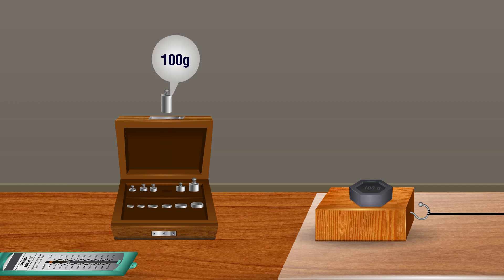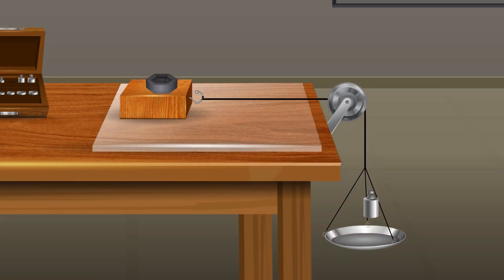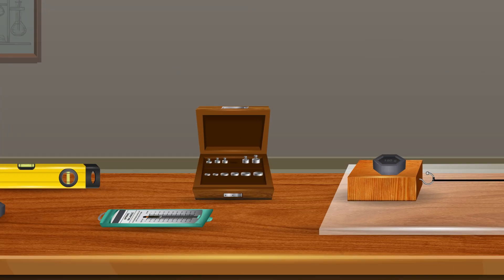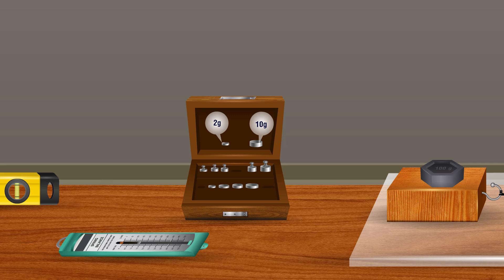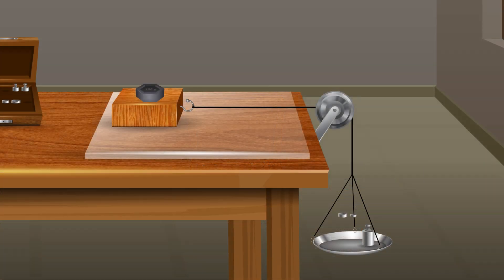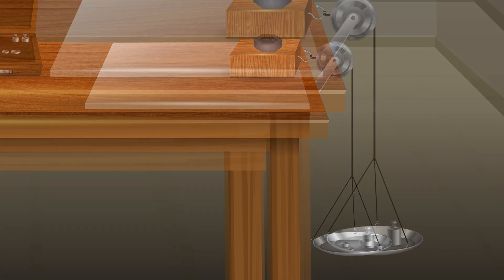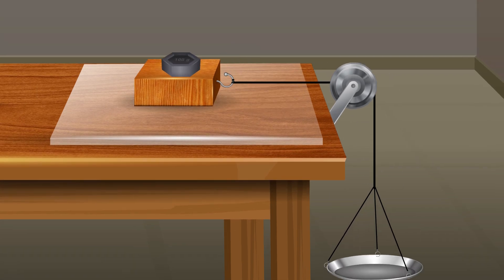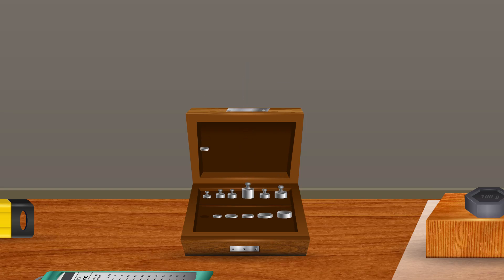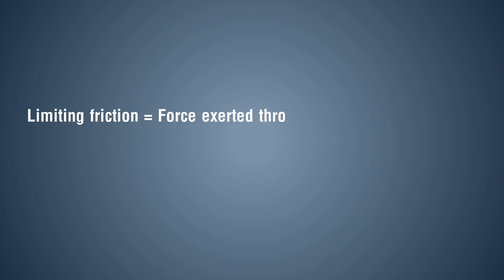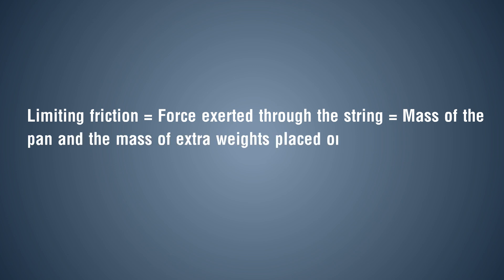Remove all the masses from the pan and place the wooden block in its initial position. Put a mass on the wooden block, then add masses from the weight box on the pan until the block together with the mass starts to slide over the surface. Note the mass. Limiting friction is equal to the force exerted through the string, which equals the mass of the pan plus the extra weights multiplied by acceleration due to gravity, g.